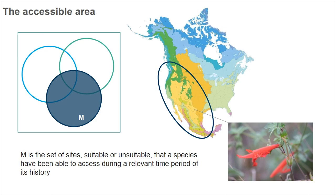In our current example, we could think that the M of this plant includes most of western North America, with plenty of areas that are dry but also landscapes with conditions that are not suitable for the species. But the important thing about this area is that here the absence of the species is meaningful.